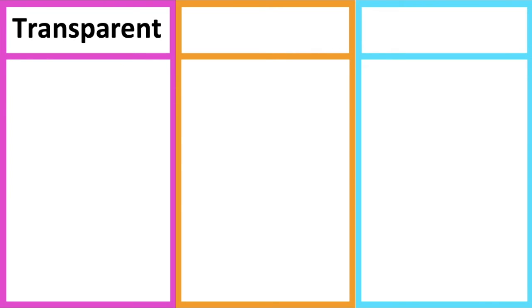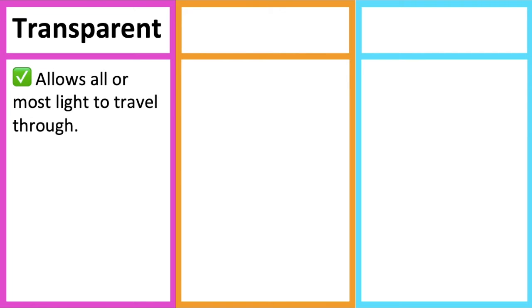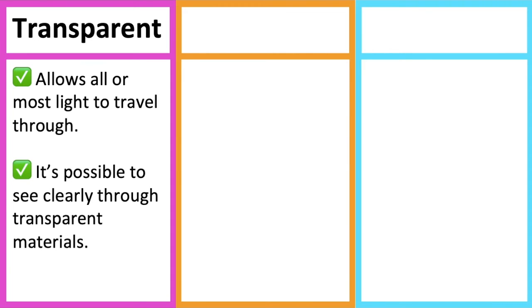Transparent refers to a material that allows all or most light to travel through. It's possible to see clearly through transparent materials. For example, glass.